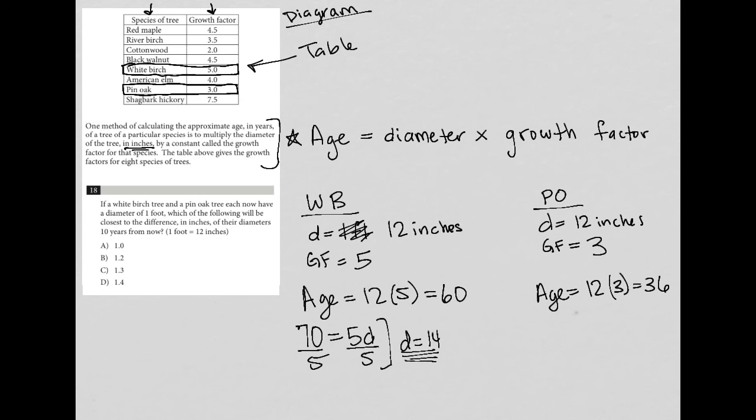I'm going to do the exact same thing for the pin oak. So in 10 years, it'll be 46 years old. And again, the diameter, I don't know, but the growth factor doesn't change. So 46 equals three times D. Divide both sides by three. Go back to my calculator. 46 divided by three is D equals 15.33 with a bar over it.